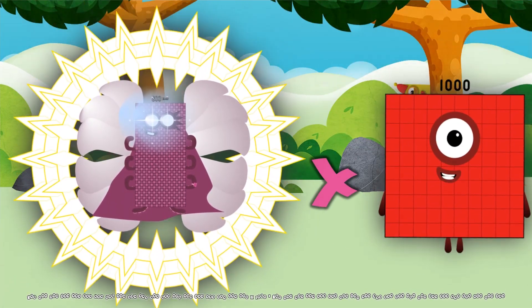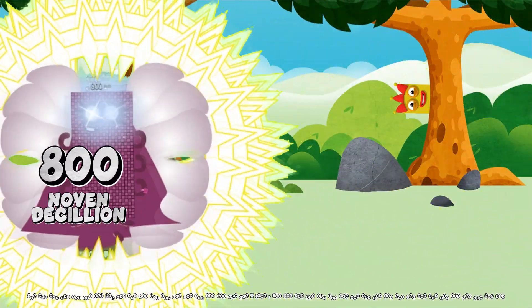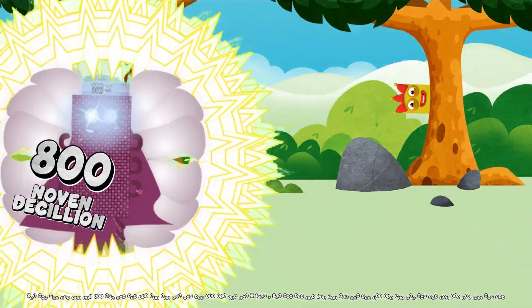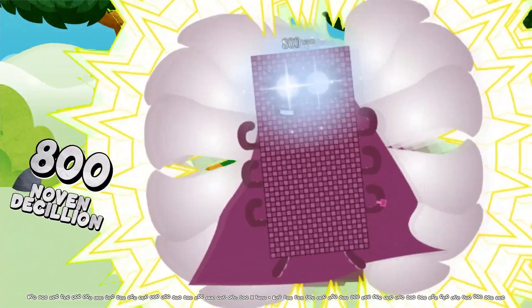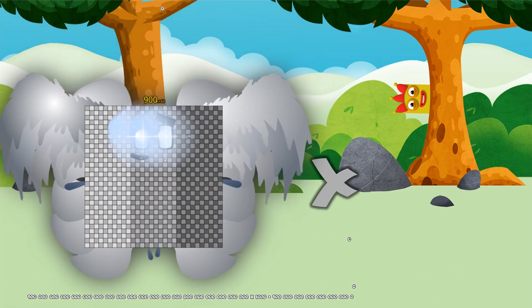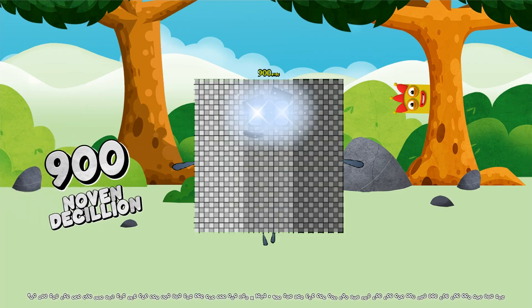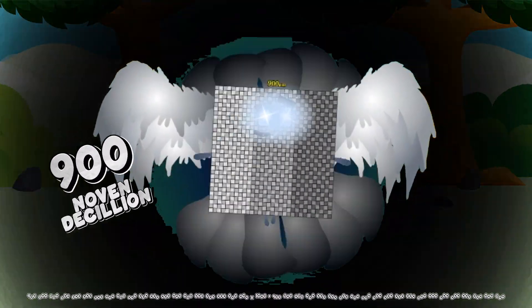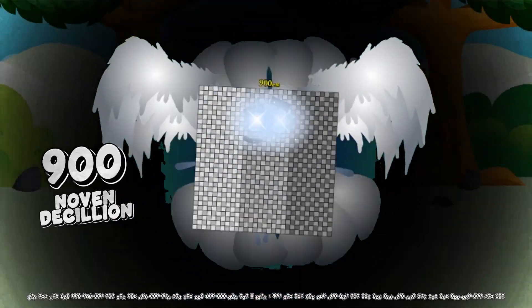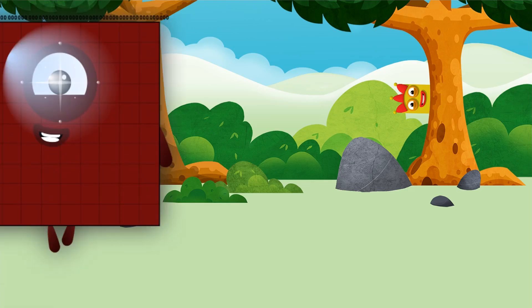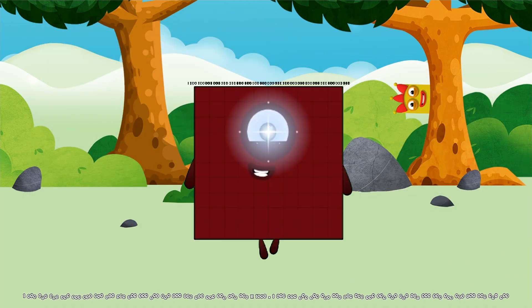800 octadecillion multiplied by 1,000 equals 800 novendecillion. 900 octadecillion multiplied by 1,000 equals 900 novendecillion. 1 novendecillion multiplied by 1,000 equals 1 novendecillion.